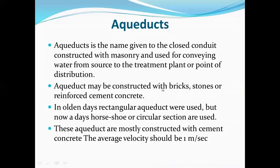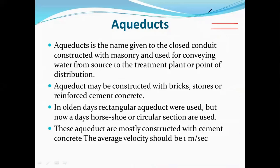Aqueduct: in irrigation engineering, an aqueduct is the structure constructed across a valley or natural drain to carry water. But nowadays the term aqueduct is loosely used for conduits carrying water — a closed conduit constructed for carrying water from the source to the treatment plant or point of distribution.